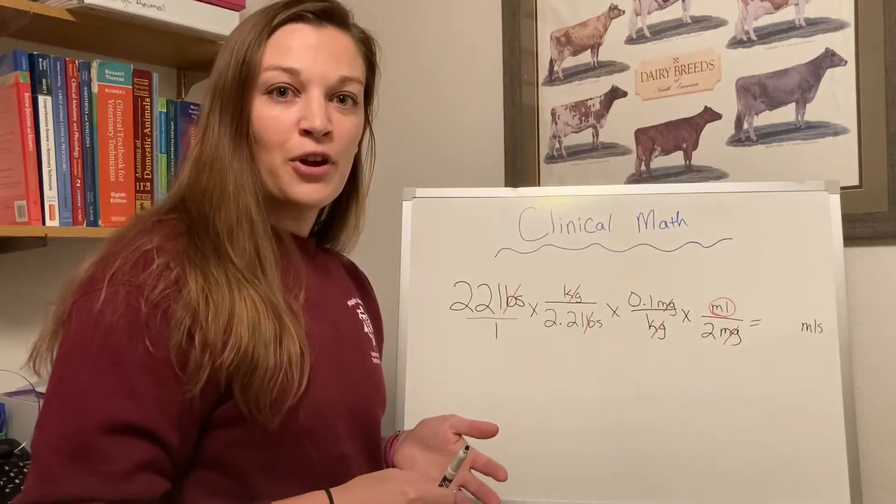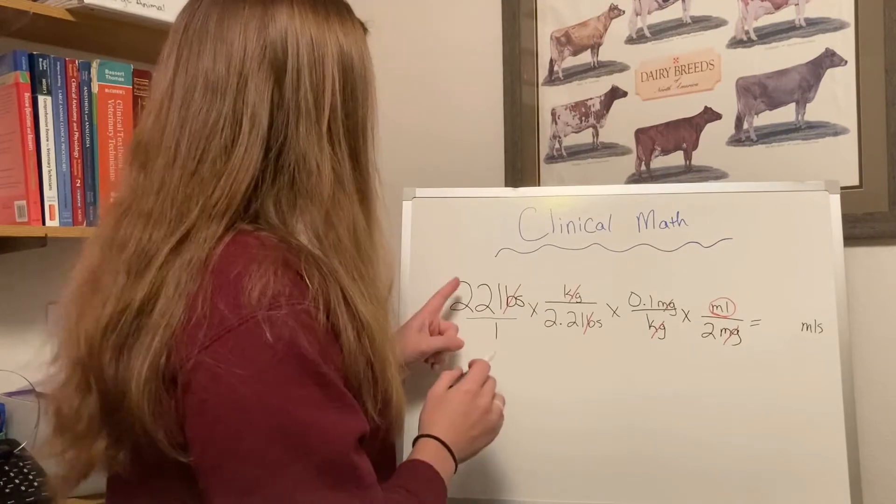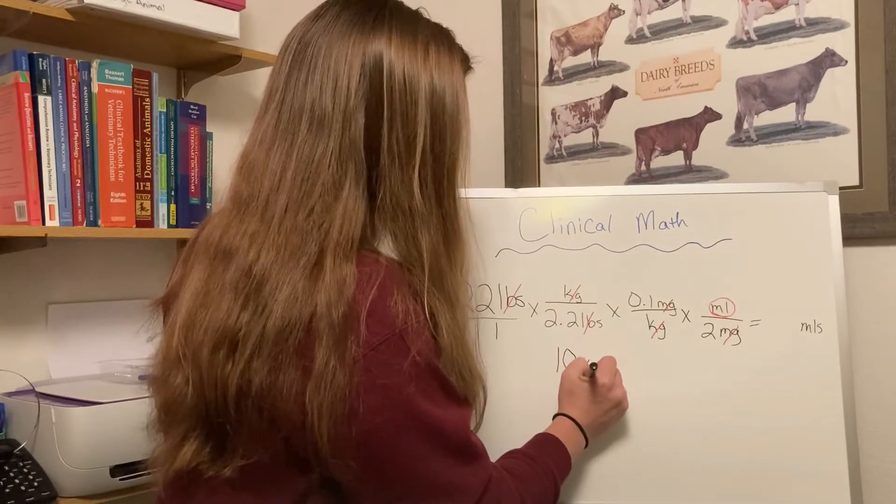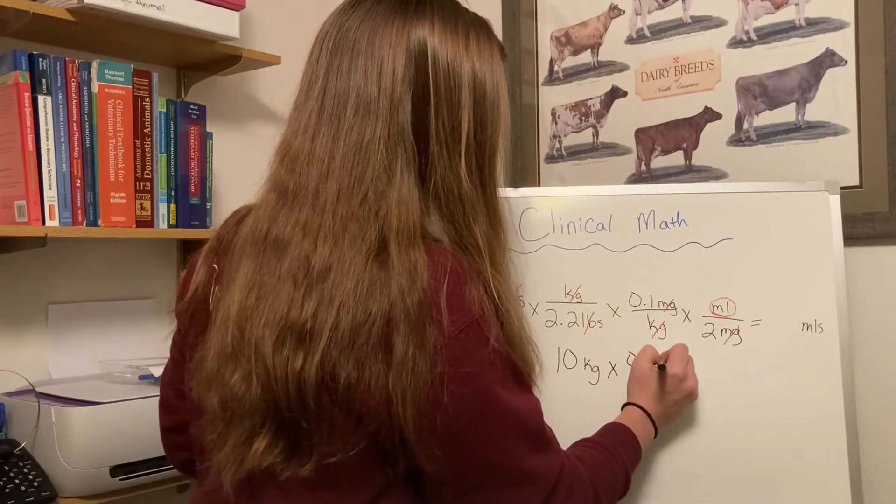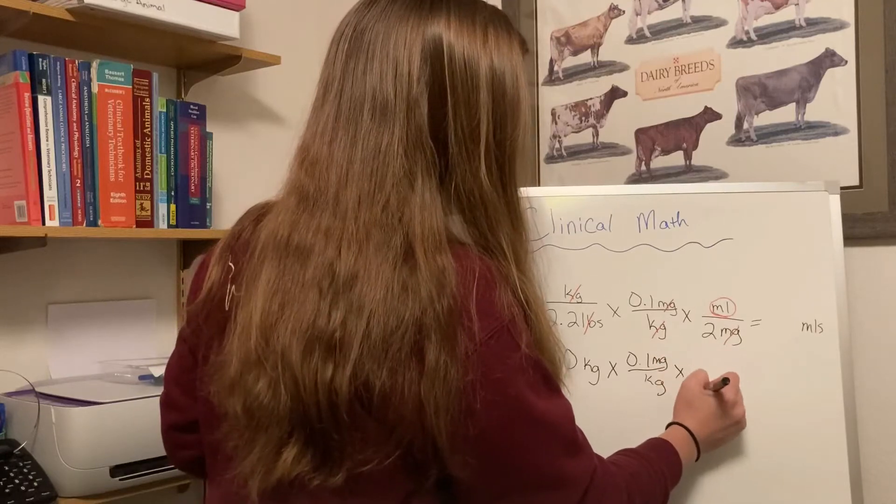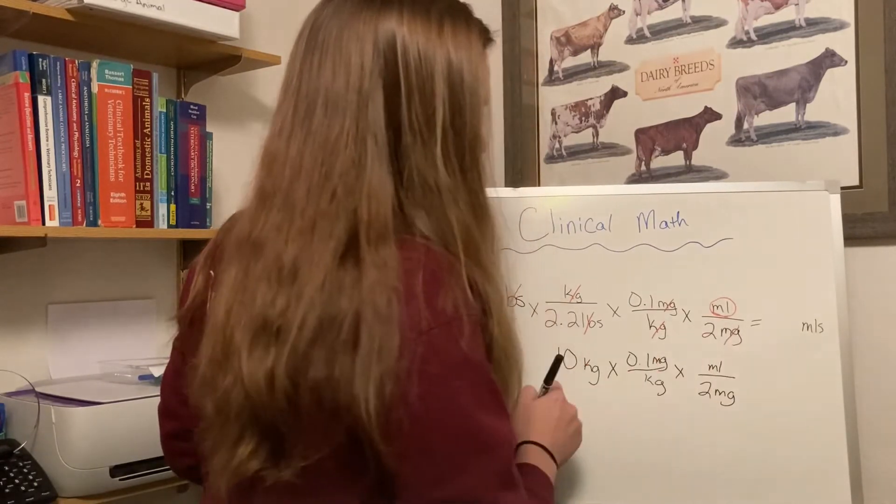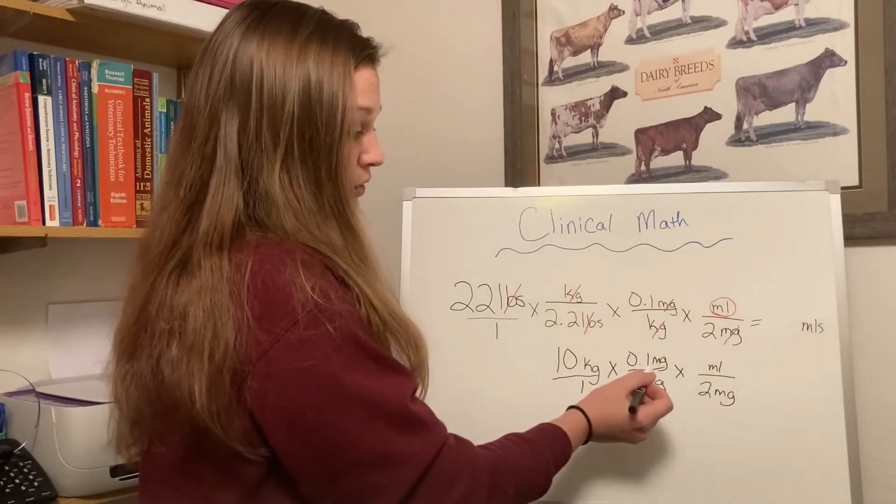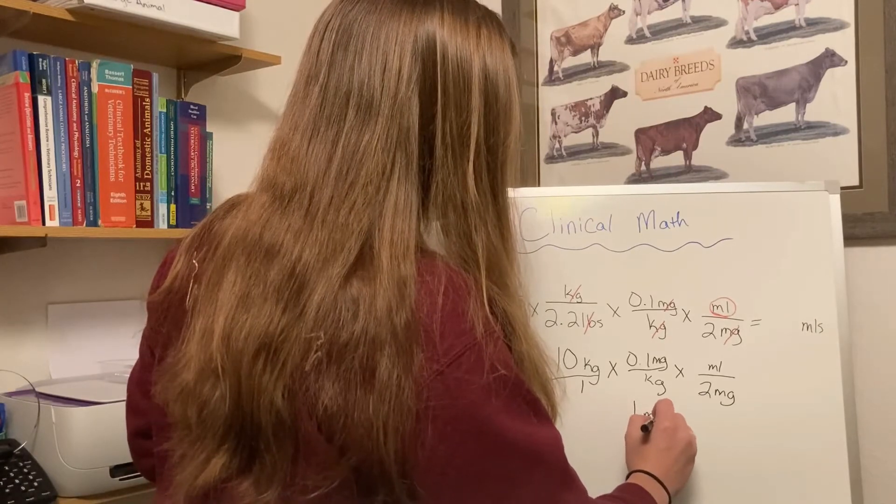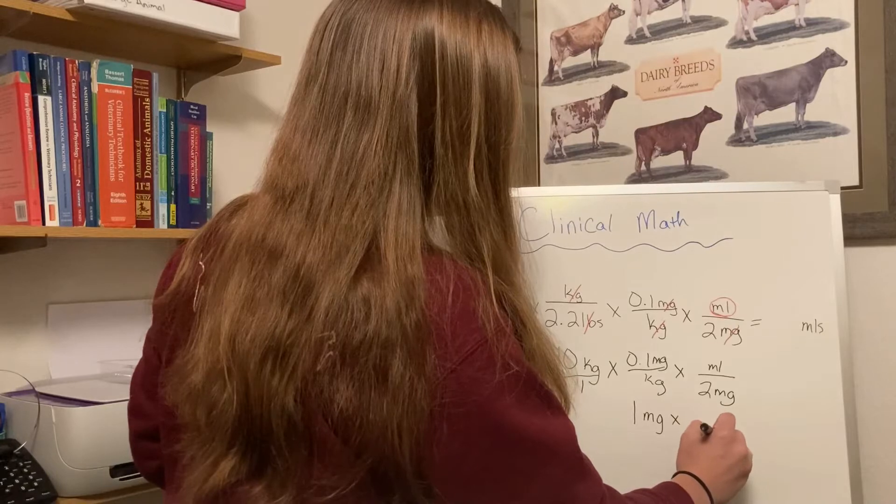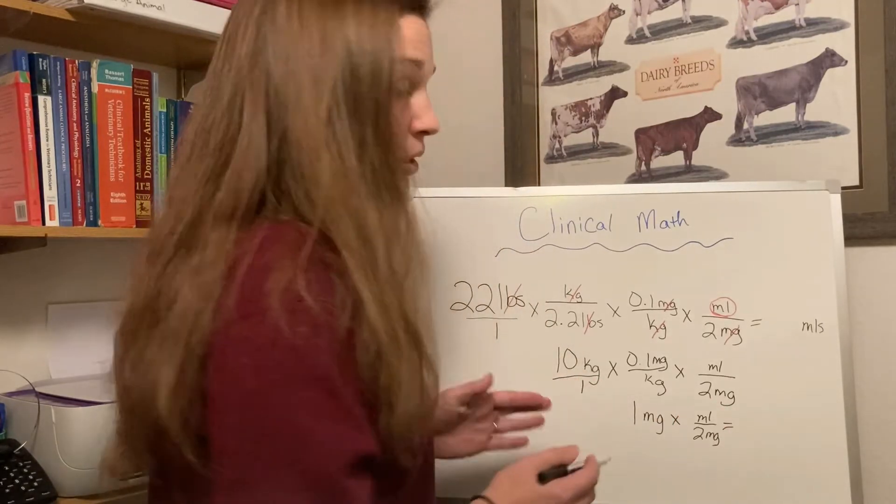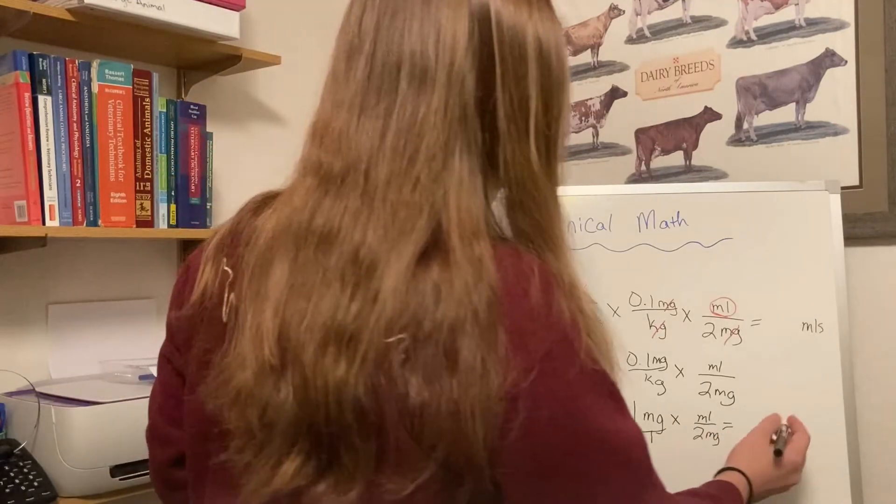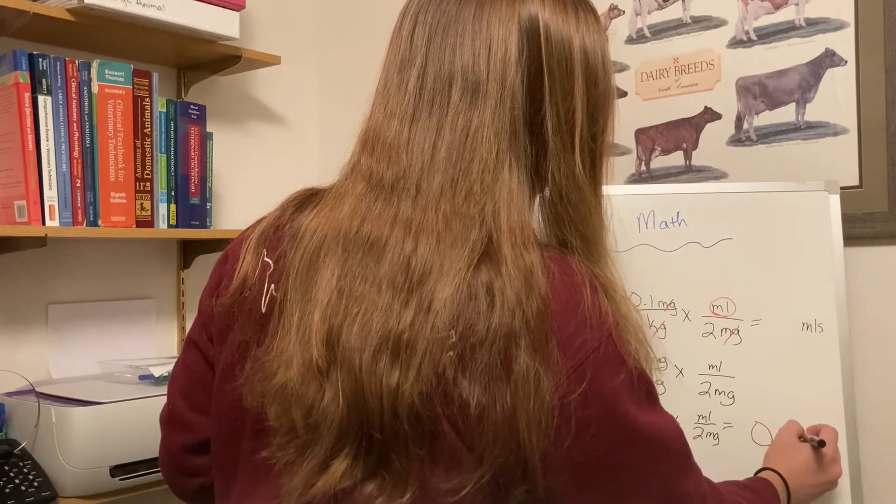So to start us out today, I'll break this down for you again. We're going to start with taking 22 pounds divided by 2.2. So that leaves us with 10 kilograms. Now we know how many kilograms our patient is, but we've got a couple more steps. Remembering our whole number over 1, now we have 2 top numbers so they multiply. So this puts us at 1 mg. And now we're down to a number on the top and a number on the bottom, so we're going to divide.